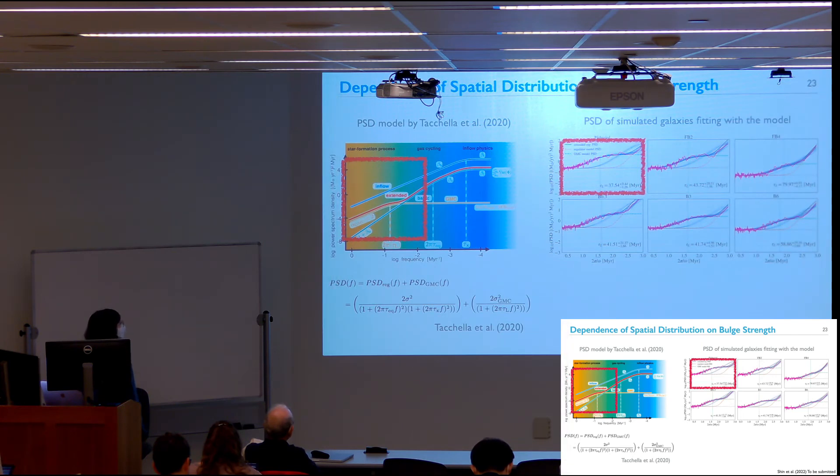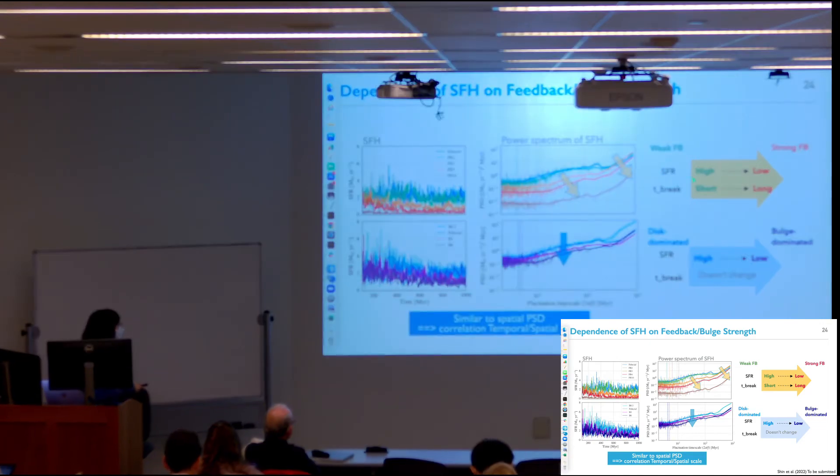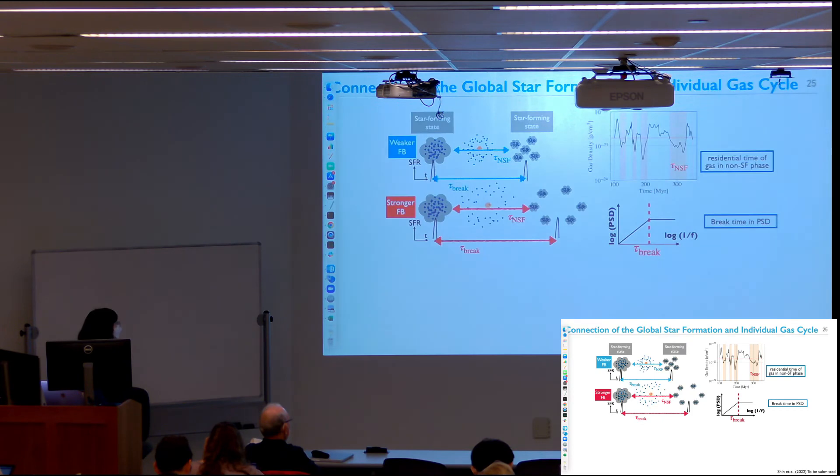For the temporal scale, we also analyze using the PSD model suggested by Takela. This is the result. For the temporal result also was similar to the spatial one. As we saw, star formation is suppressed by the feedback and also by the bulge. We can see that the break time in PSD moves to right in higher feedback, while the time break doesn't change.